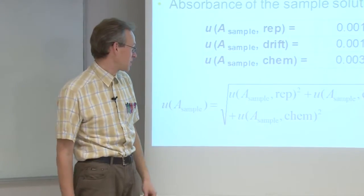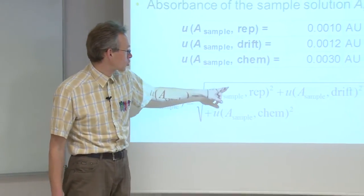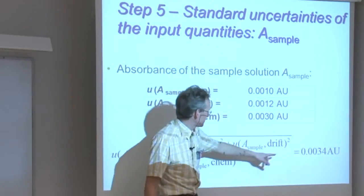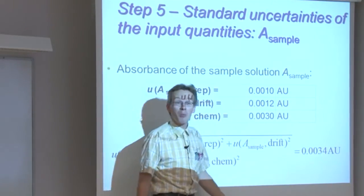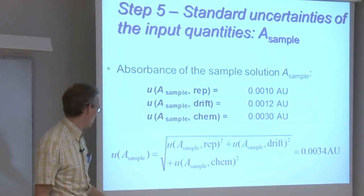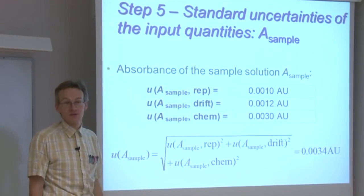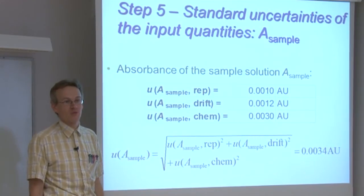We square all the components, sum them up, take the square root, and find that the combined standard uncertainty of absorbance of the sample solution is 0.0034 absorbance units.